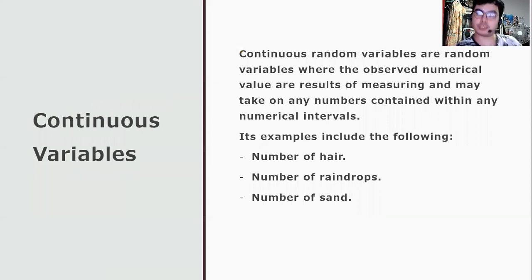When we say continuous random variables, these are random variables where the observed numerical values are results of measuring and may take on any numbers contained within any numerical interval. This can be described through decimal, fraction, or a whole number. Remember the finite and infinite set. Continuous variables can be related with infinite sets because both are uncountable.